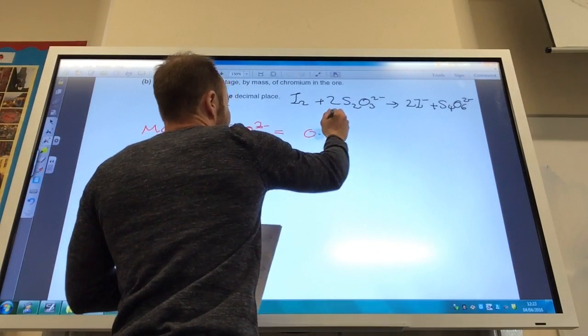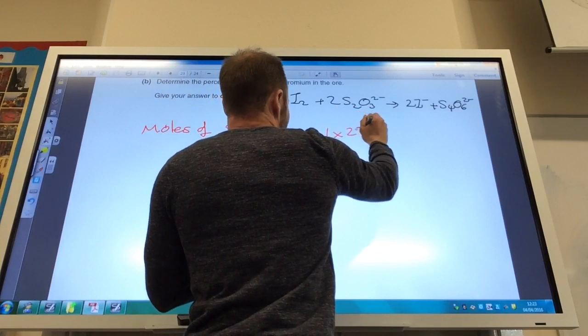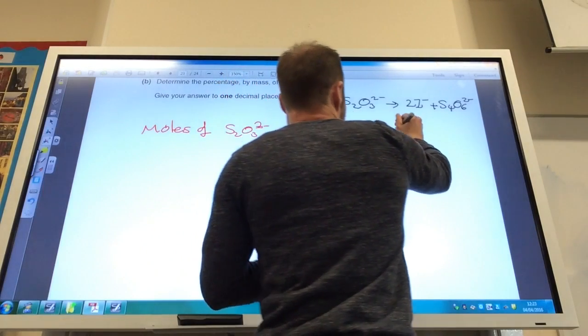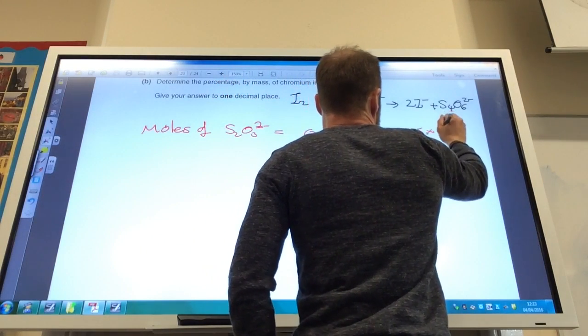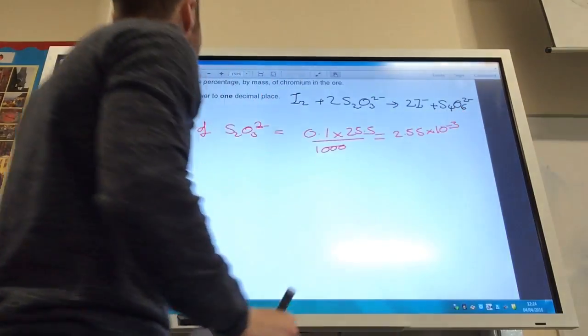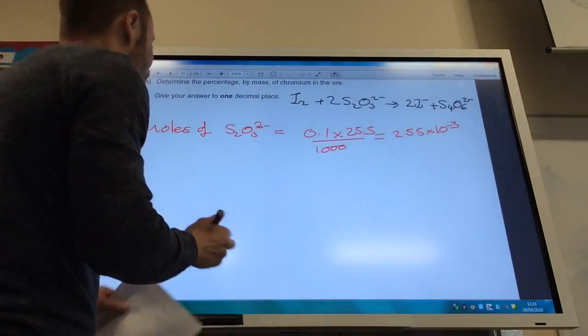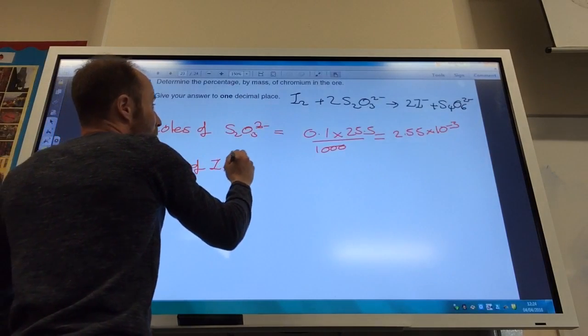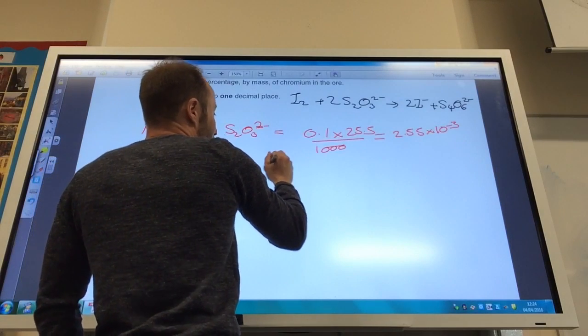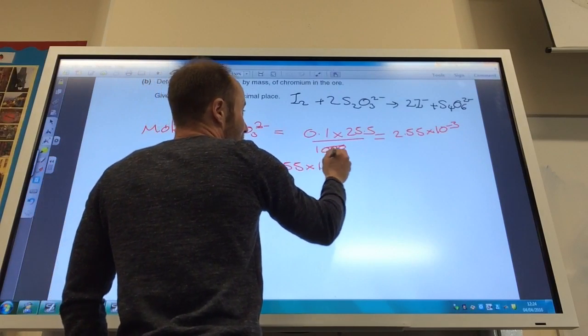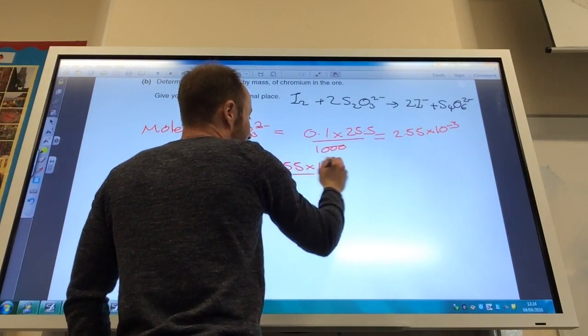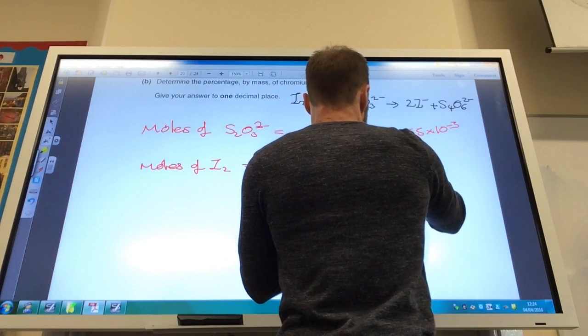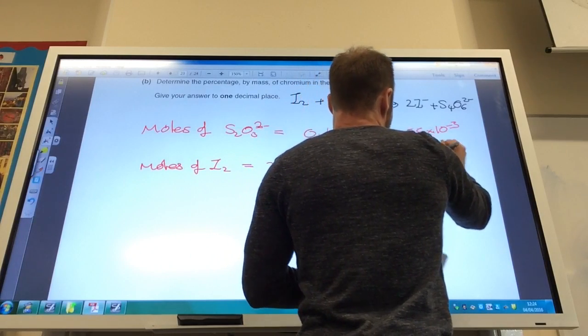So moles of S2O3 2- is going to equal your concentration times the volume that you've used and divide that by a thousand and you get 2.55 times 10 to the minus 3. You've then got to get that back to your moles of iodine so moles of I2 well it's going to be half that number 2.55 times 10 to the minus 3 divided by 2 because it's a 2 to 1 reaction so that gives you 1.275 times 10 to the minus 3.